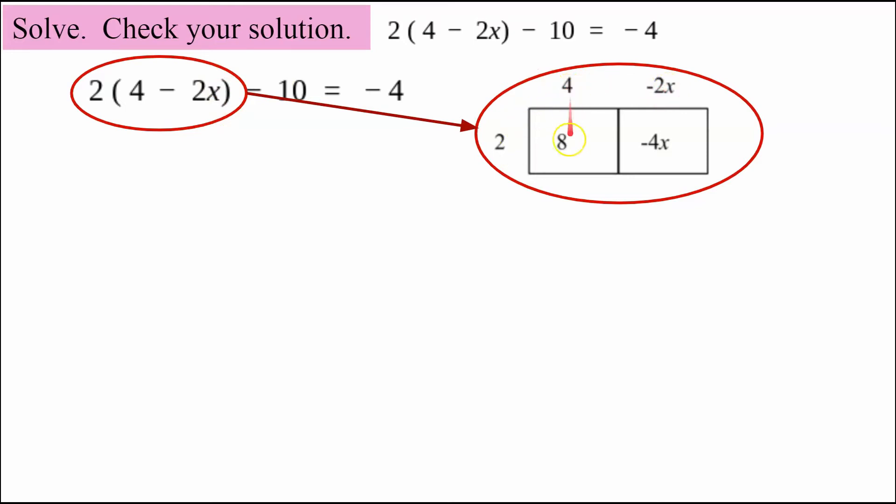So 2 times 4 is 8. You can see that's the area of this rectangle. And then the second rectangle is 2 times negative 2x, which is negative 4x. So I now know that this expression 8 subtract 4x is equivalent to this value in the red circle.